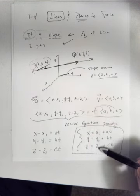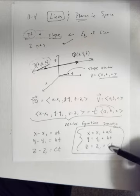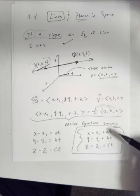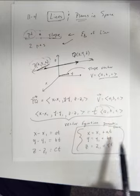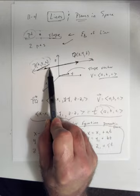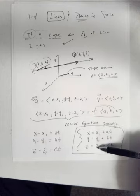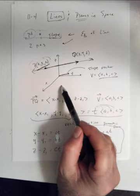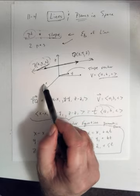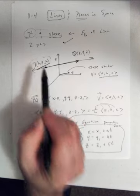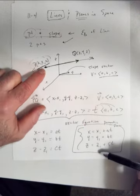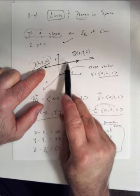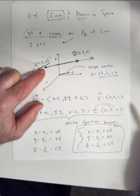You will be given the point and A, B, C. Then grab a value for T and plot those points — as you change T, those points line up. When T = 0, you go to the given point X₁, Y₁, Z₁. The slope vector terms make you follow the direction of the slope vector, and T takes you to all points along the line.